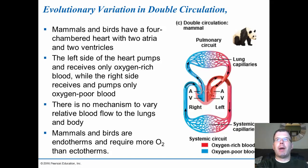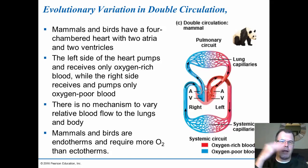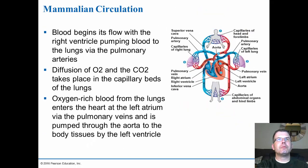In mammals and birds we have the four-chambered heart so we always have to pump blood to our lungs — we can't bypass that. The right side pumps blood to the lungs and the left side pumps blood systemically throughout the rest of the body. There's no mechanism to vary the relative blood flow to the lungs and body because there are no pathways to cross. Mammals and birds are endotherms and require more O2 than ectotherms, so a closed four-chambered system is more efficient because we need more O2 to keep our body temperature up.